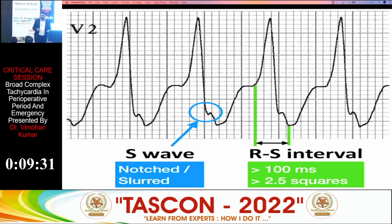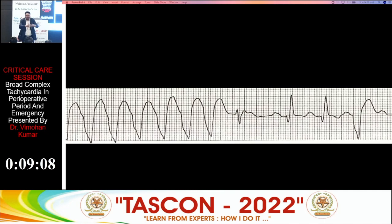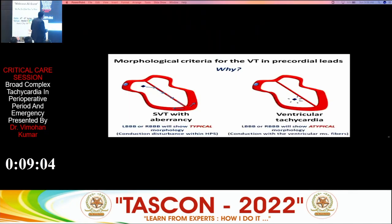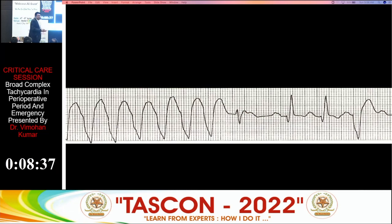So negative concordance, S-wave nadir notching, and RS interval more than 100 milliseconds all point to ventricular tachycardia. Fusion beats — the fusion of atrial and ventricular beats occurring together — and capture beats, where in between the ventricular rhythm you get atrial rhythm producing a near-normal QRS complex, are further signs of VT. Presence of old ischemic changes like Q waves or inverted T waves in the background can suggest an ischemic origin for the ventricular tachycardia.